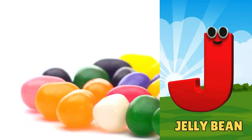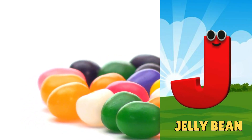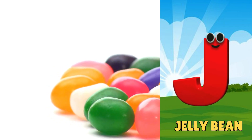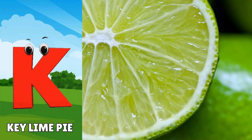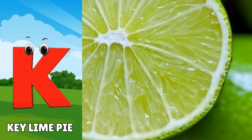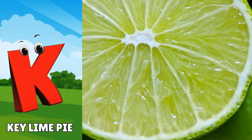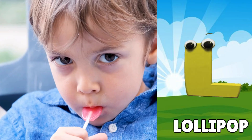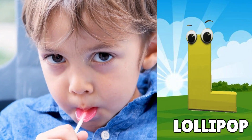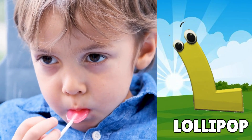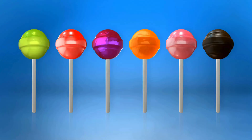J is for Jelly Bean. J, J. Jelly Bean. K is for Key Lime Pie. K, K. Key Lime Pie. L is for Lollipop. L, L. Lollipop.